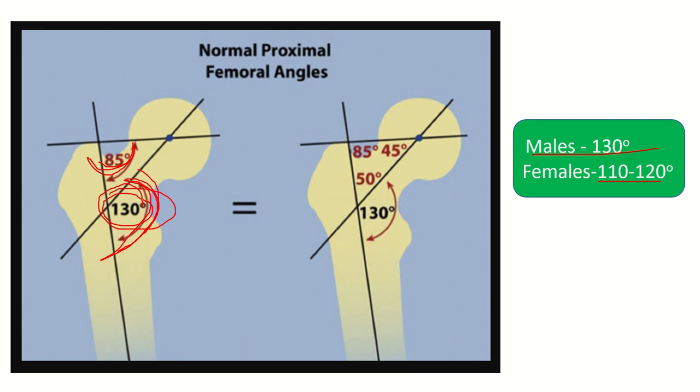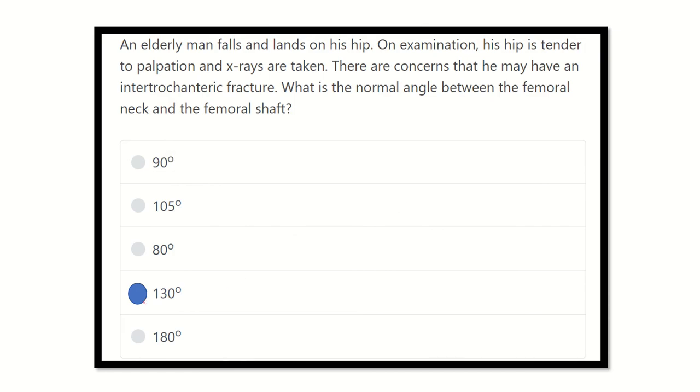This is the 130-degree angle and this angle lies between the neck and femoral shaft. So here our final answer - this is 130 degrees, the normal angle of the femoral neck and the femoral shaft is 130 degrees. Thank you.